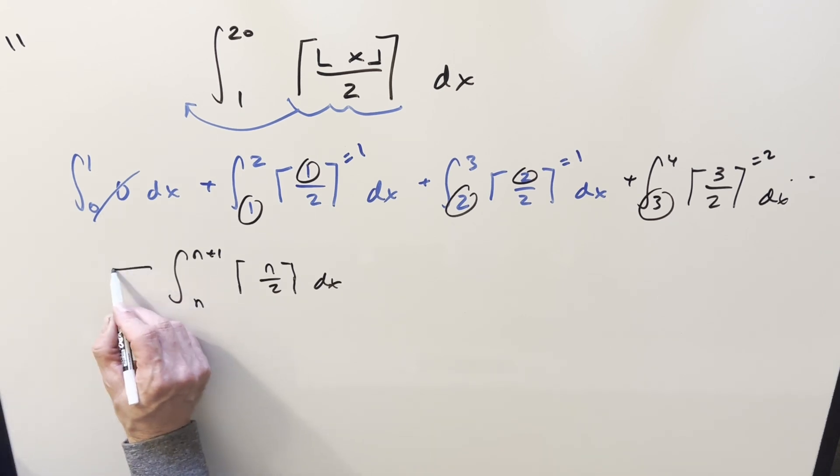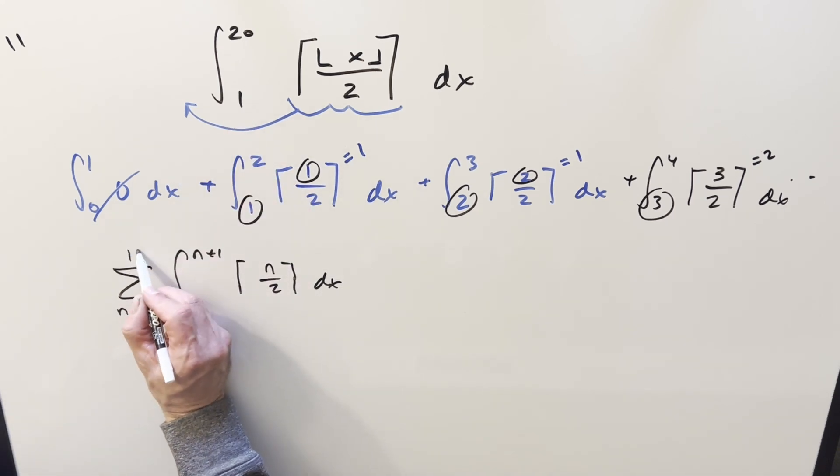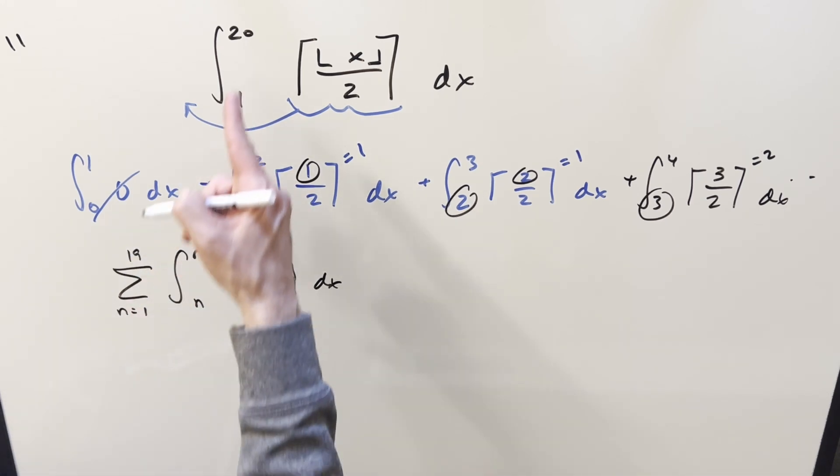And the way we can summarize the whole thing, we're starting here at 1, so we're going to have n equals 1. And the last one, we don't want 20, we want 19 because then we add the n plus 1, then we get the 20.